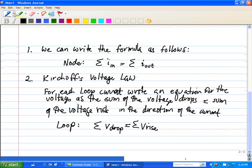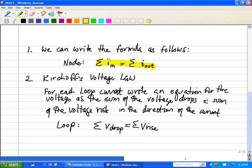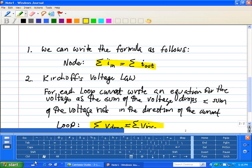In summary, our connection constraints say for each node in a circuit, we have the sum of the currents in equal to the sum of the currents going out of each node. That's KCL, or Kirchhoff Current Law. And for Kirchhoff Voltage Law, we have the sum of the voltage drops is equal to the sum of the voltage rise.